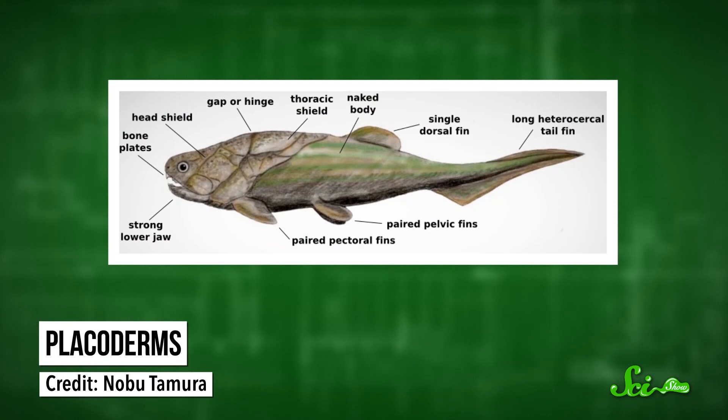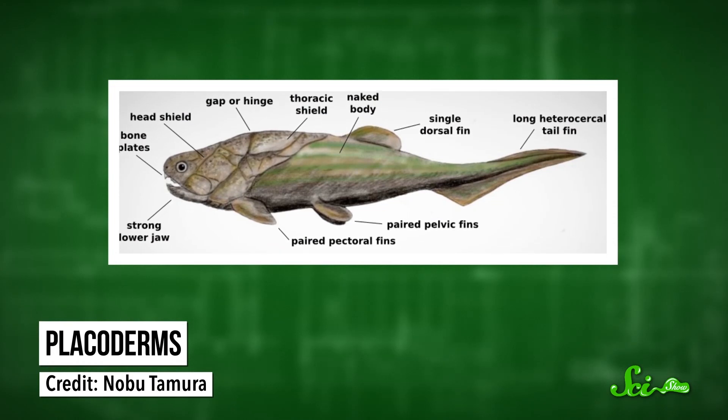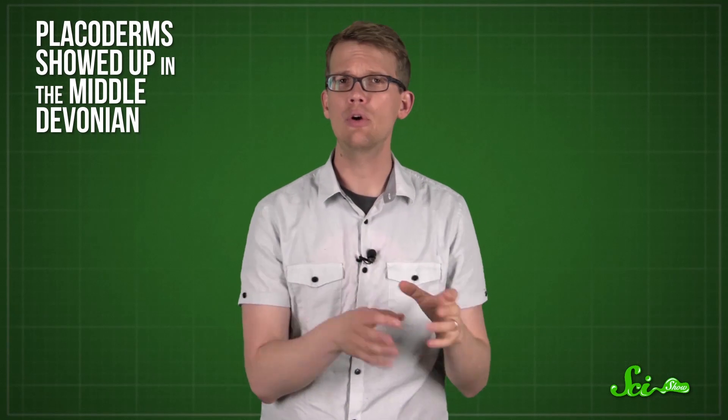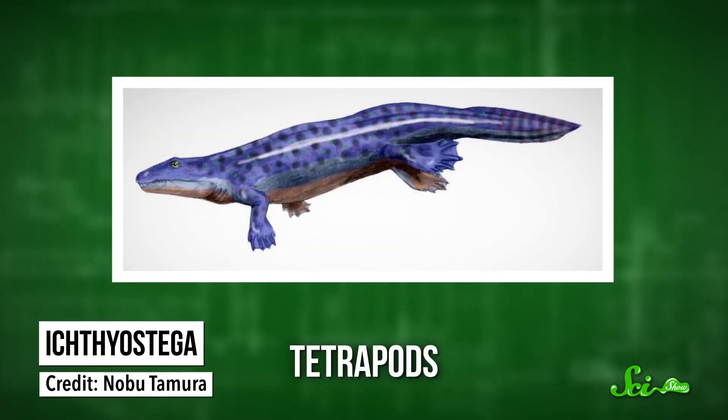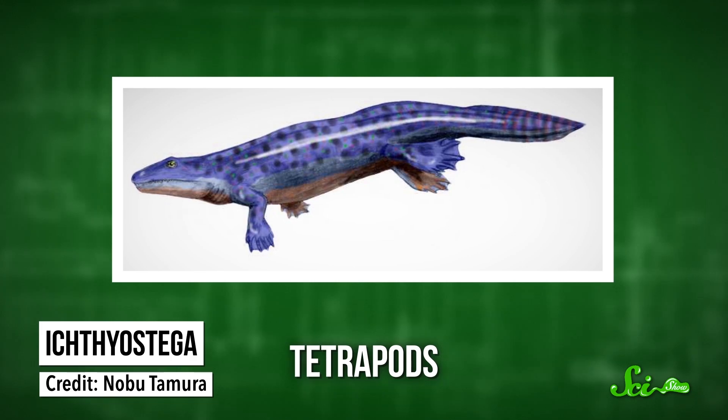These fish, called Placoderms, had tough, bony armor surrounding their skulls. They were the earliest vertebrates with jaws, and jaws were pretty useful for eating stuff, so they were a big success in an evolutionary sense. Placoderms showed up in the Middle Devonian. Before the Devonian was over, the first tetrapods, or four-footed creatures with backbones, had already evolved.